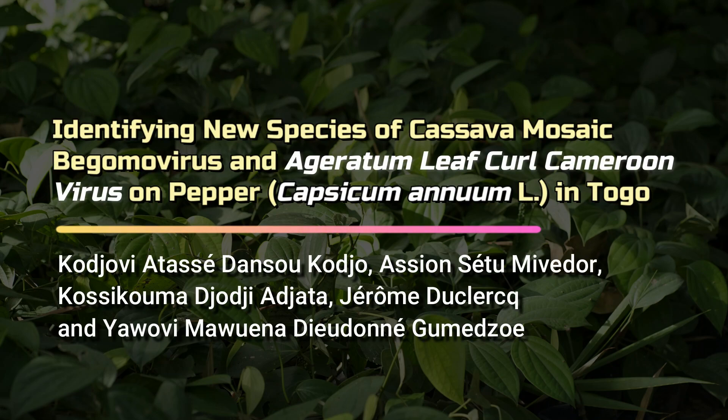Identifying New Species of Cassava Mosaic Bigamavirus and Ageratum Leaf Curl Cameroon Virus on Pepper, Capsicum annum L., in Togo. By Korjovi Ataz Dansu Korjo, Ashun Setu Maivda, Kossi Komar Georgi Ajita, Jerome Duckluck, and Yavavi Mavuena Diodon Gyumzo.